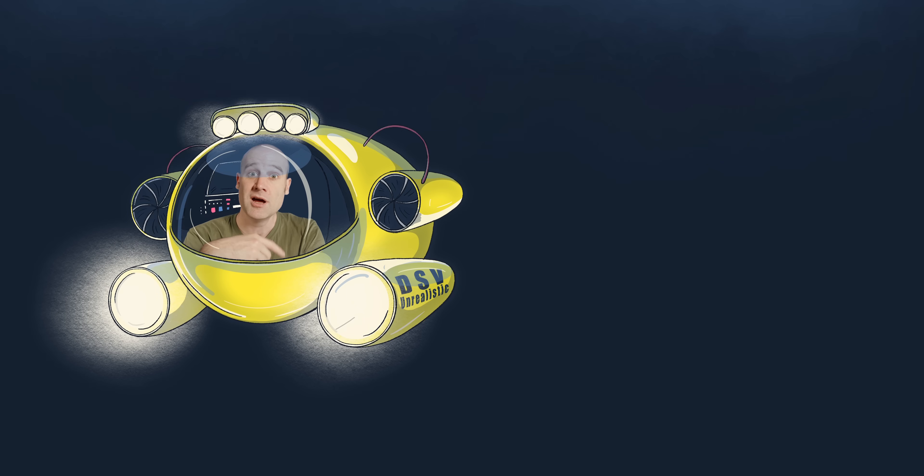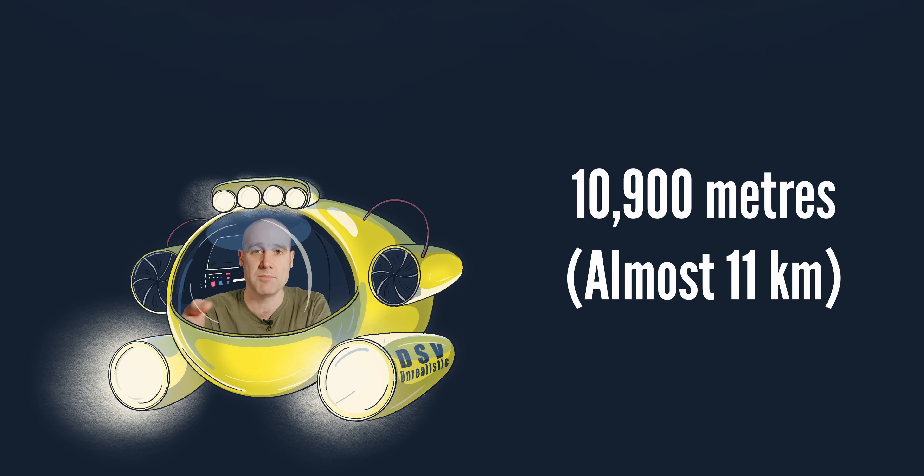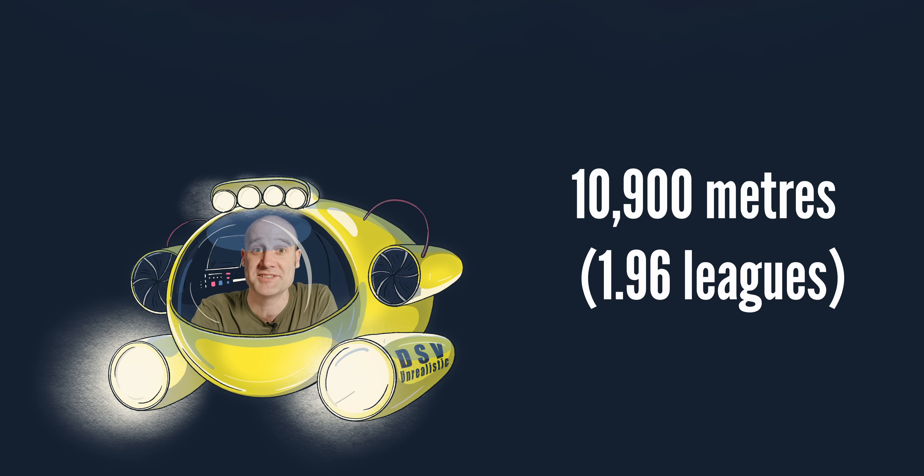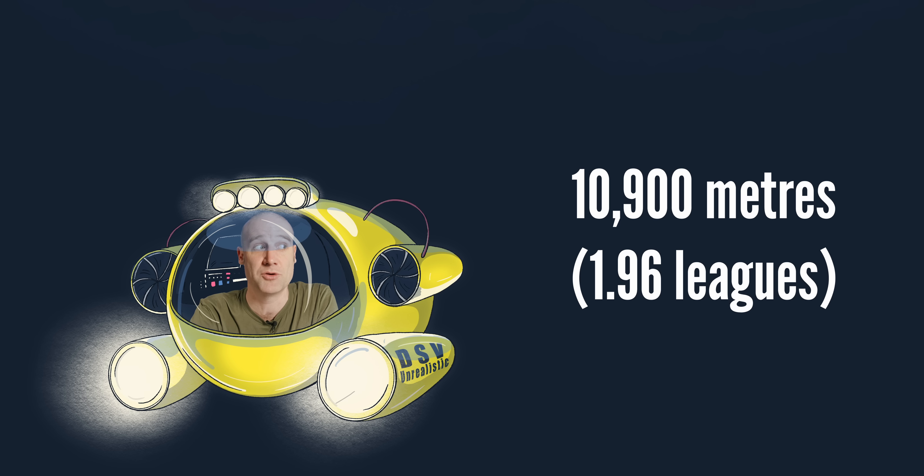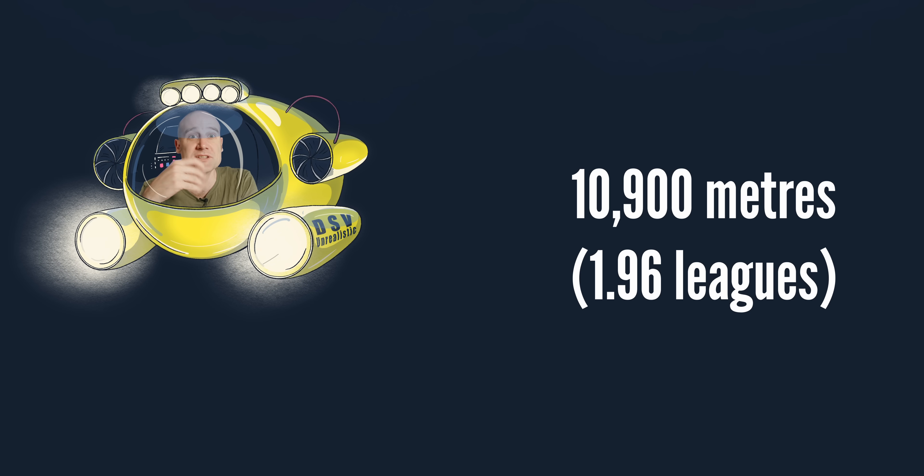And if we head on down, we have the Challenger Deep at the bottom of the Mariana Trench, which is on the order of 10,900 metres, give or take, almost 11 kilometres. So actually, if you're not a metric kind of person, almost 11 kilometres is like 6.8 miles or 54.2 furlongs. It's actually, fun fact, 1.96 leagues. So I could have called this video, almost two leagues under the sea. Which sounds a bit underwhelming, if I'm being honest.